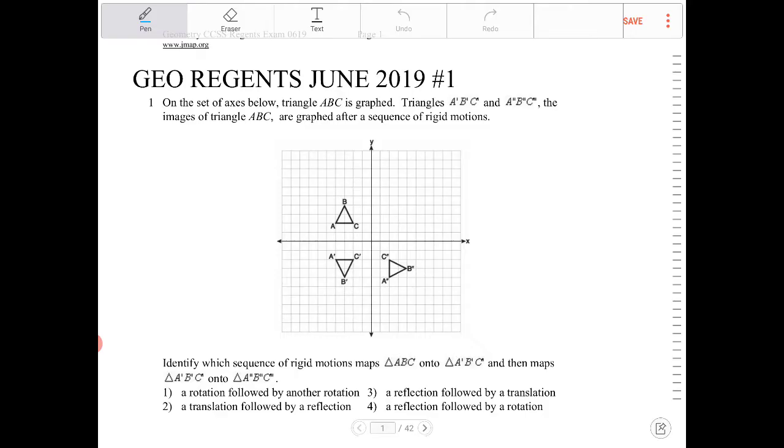Identify which sequence of rigid motions maps ABC onto A'B'C' and then maps A'B'C' onto A''B''C''.